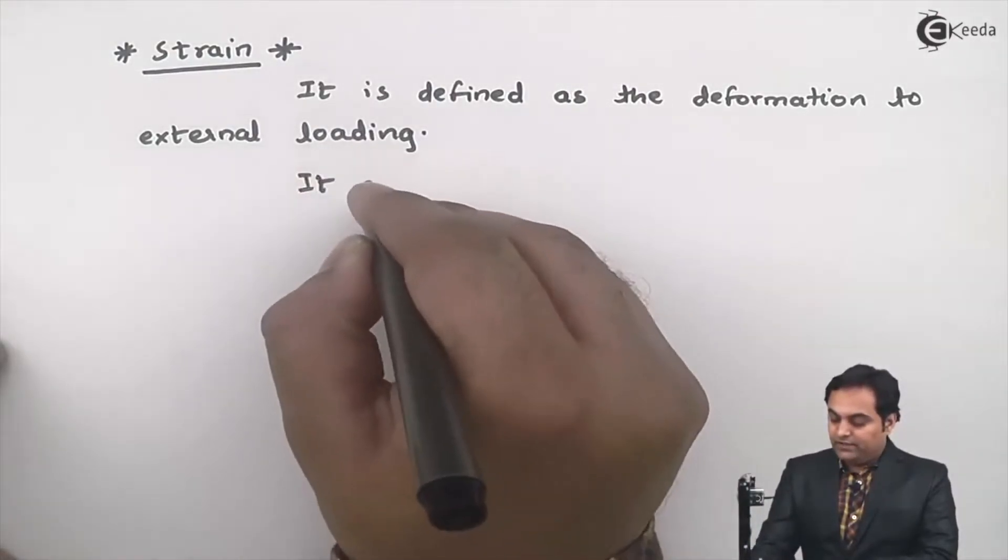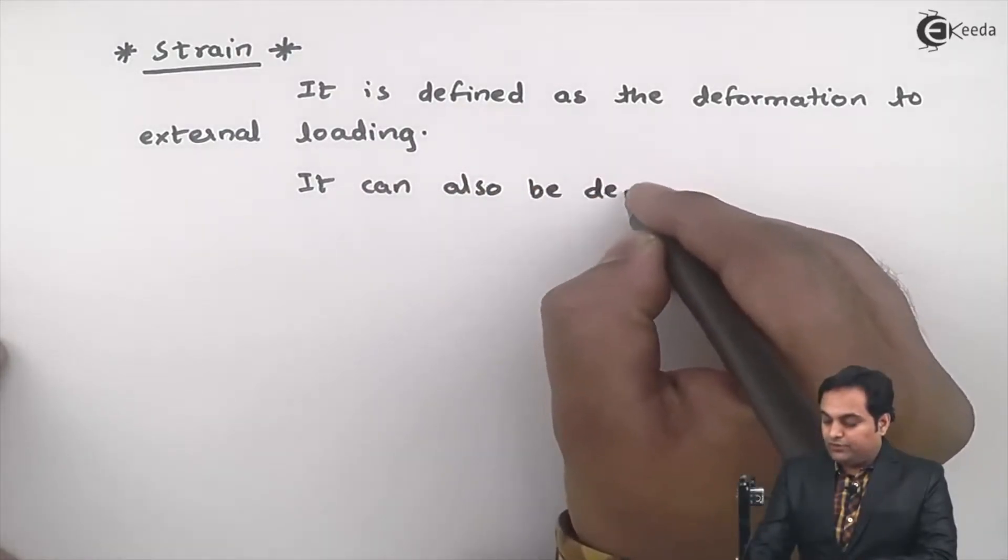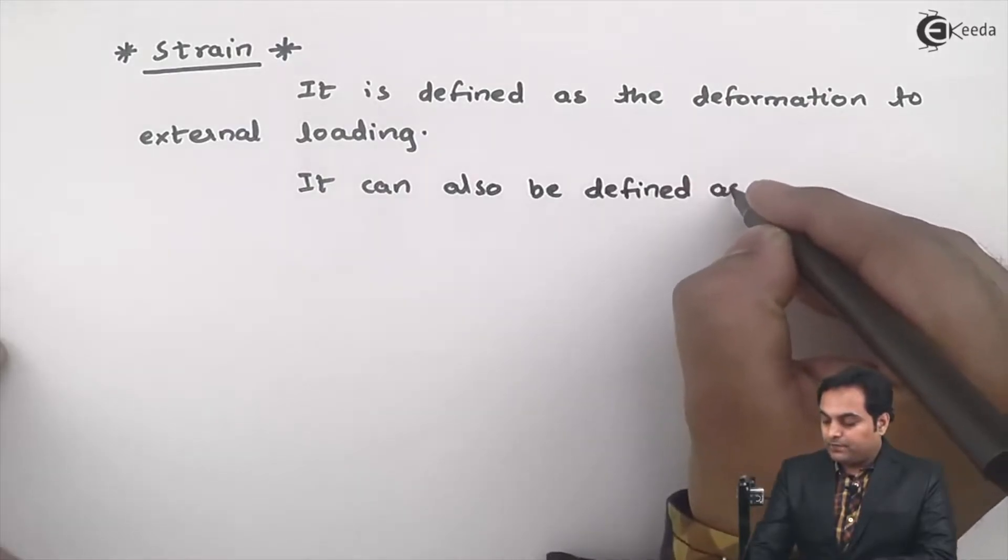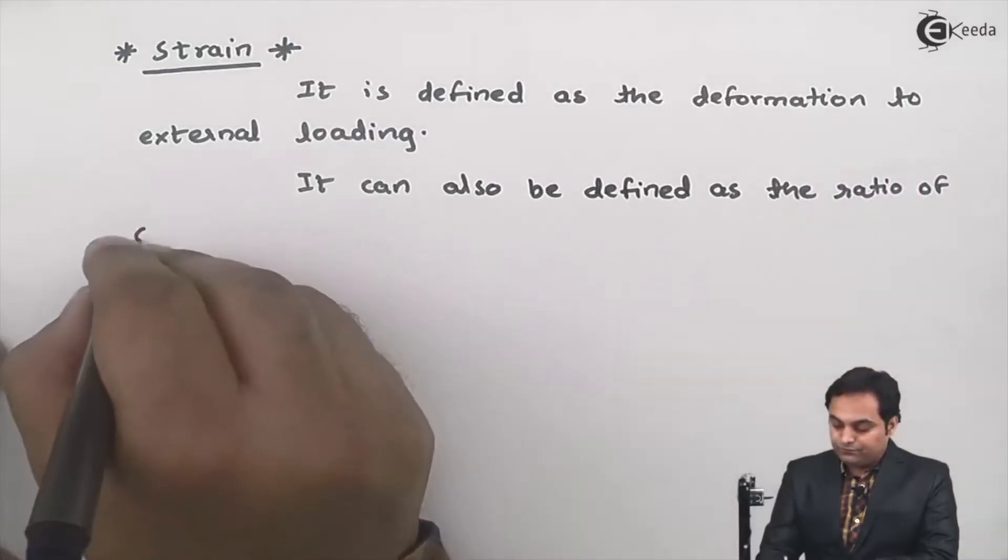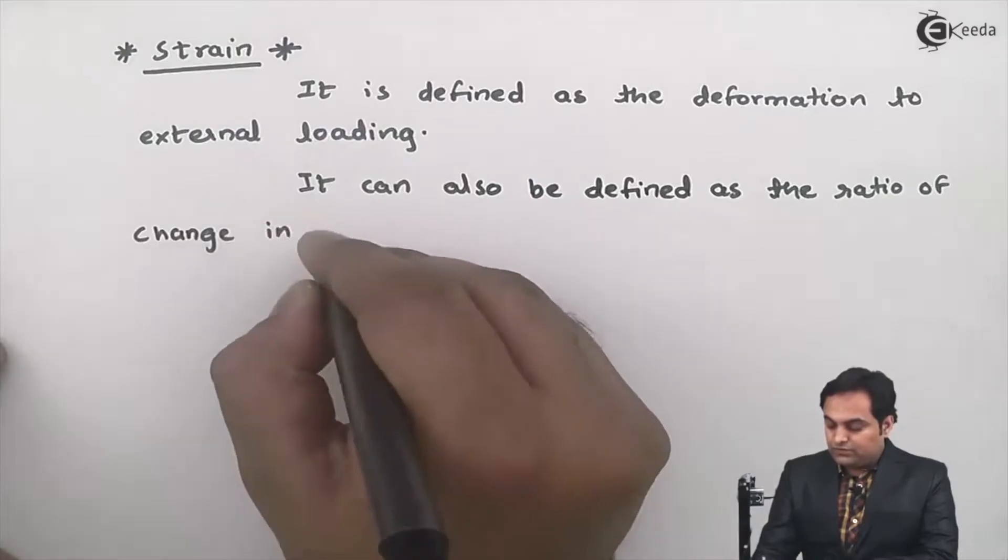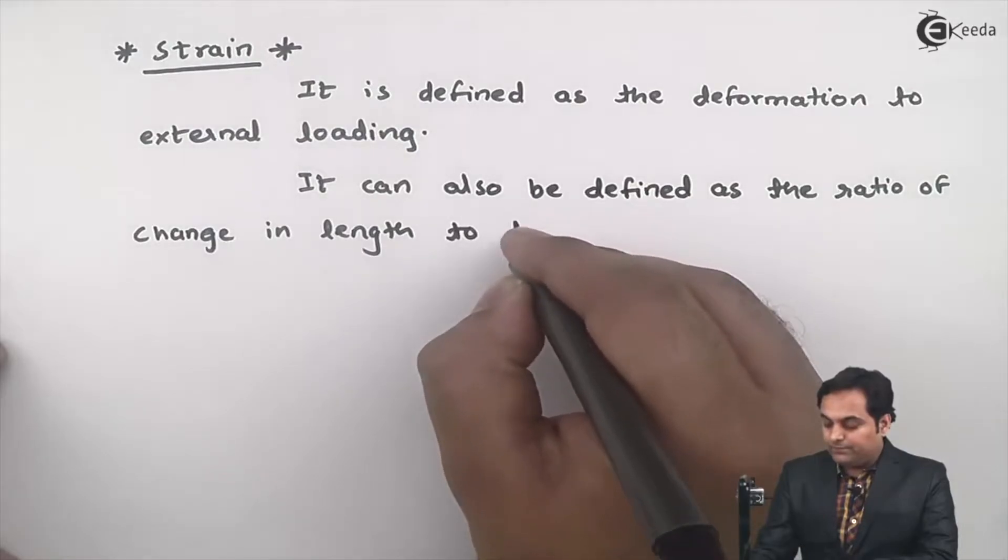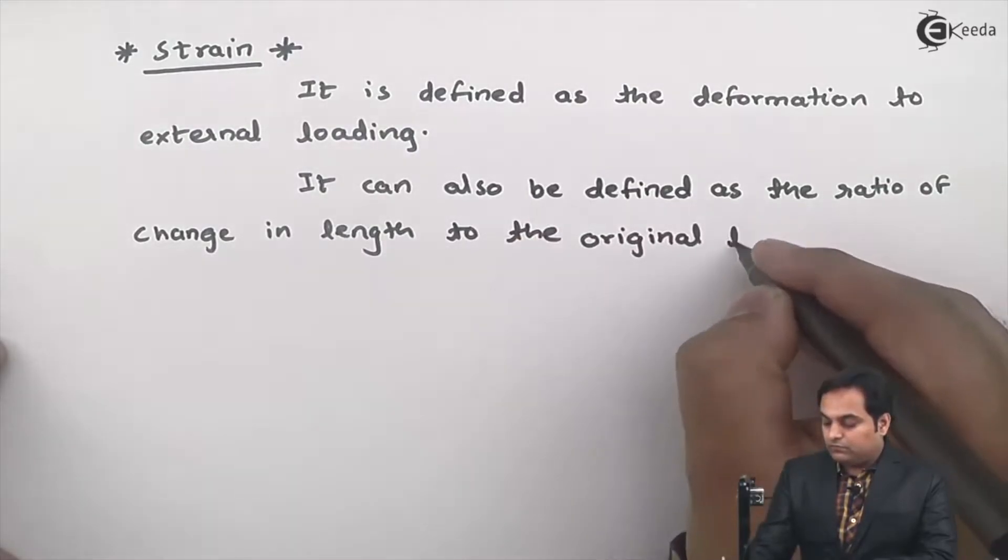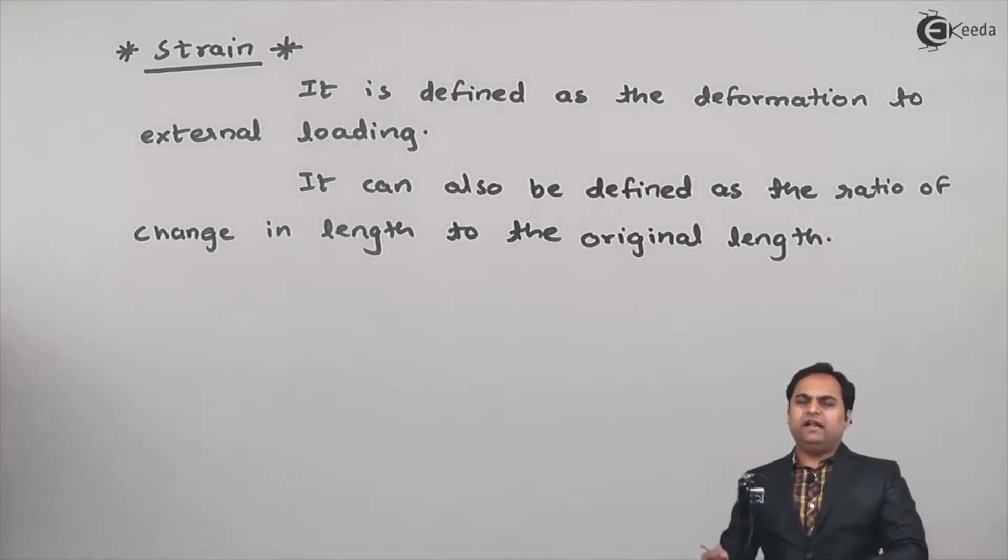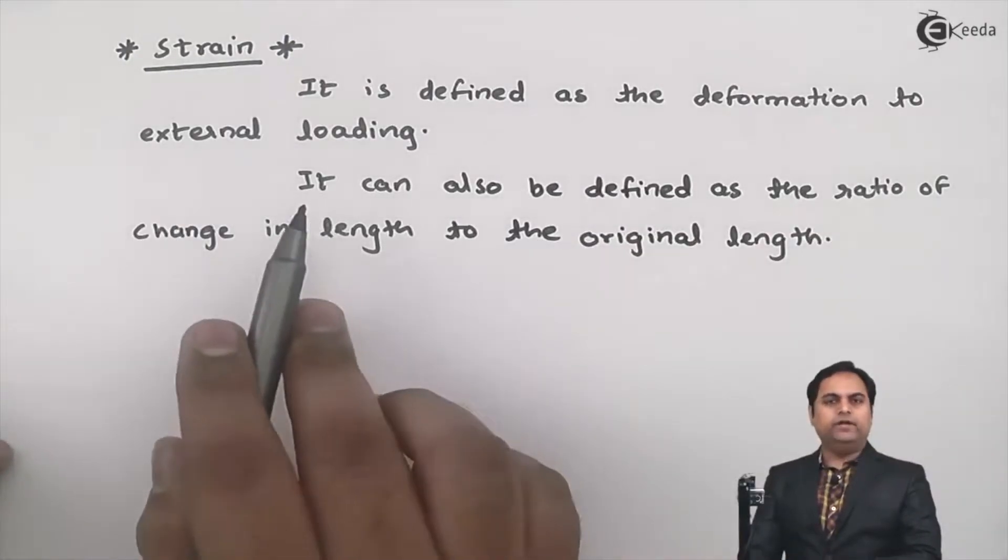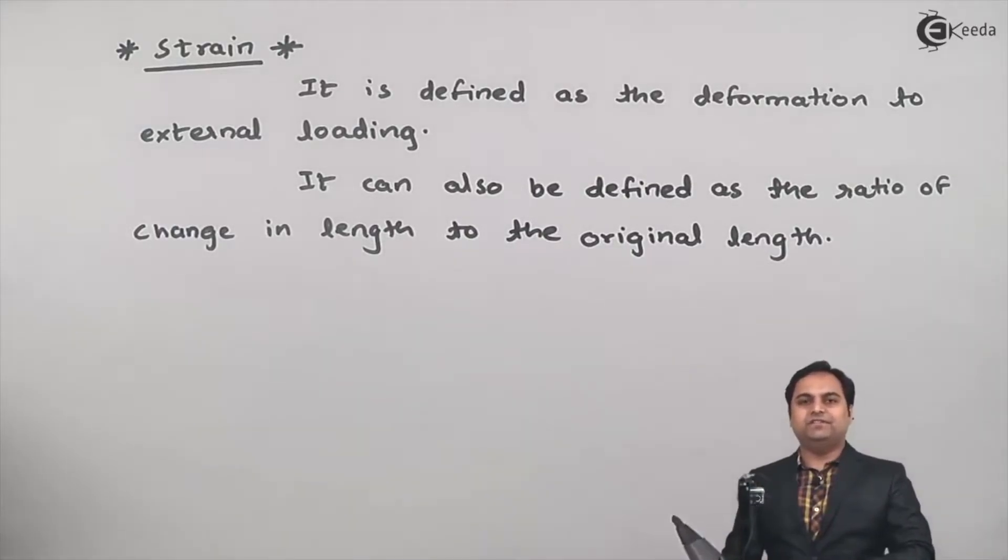It can also be defined as the ratio of change in length to the original length. So here I have written the definition of strain: it is the deformation to external loading, or it can also be defined as a ratio of change in length to original length.